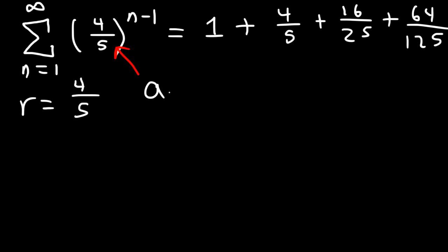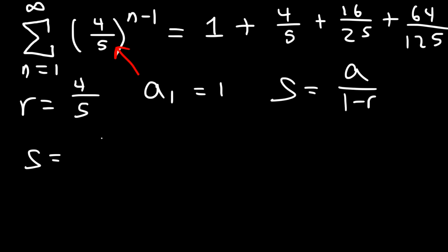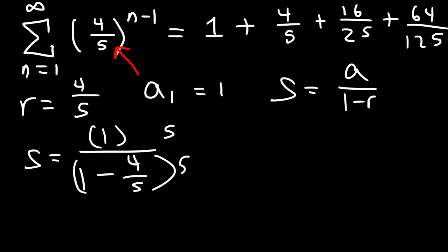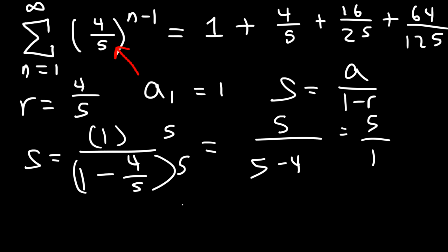The first term is clearly 1, and because the common ratio 4 over 5 is less than 1, we can use the formula. So it's going to be 1 over 1 minus 4 over 5. Multiplying by 5, this is 5 over 5 minus 4, so the sum is 5.